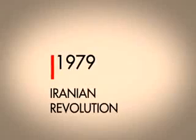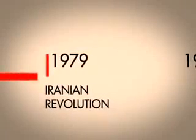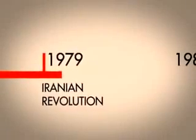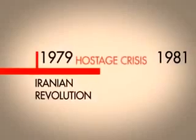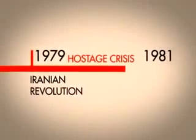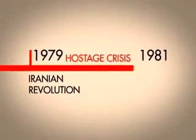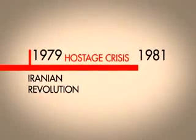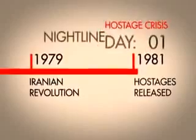For most Americans, the story begins in 1979 with the Iranian Revolution and the hostage crisis. A group of revolutionary university students took over the American embassy in Tehran and held 52 diplomats hostage for 444 days.